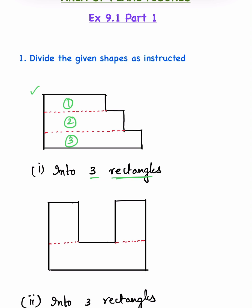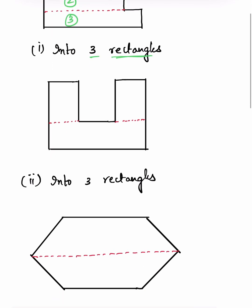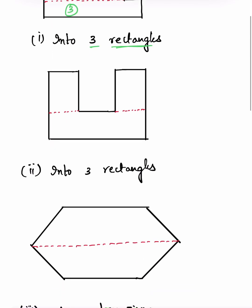The calculation of area of a rectangle is easy — it is length multiplied by breadth. So by adding the area of these three rectangles, the area of the entire shape can be found out.